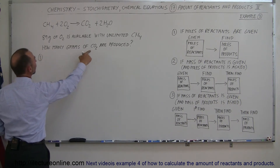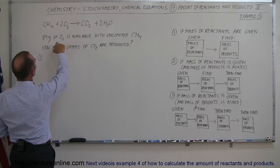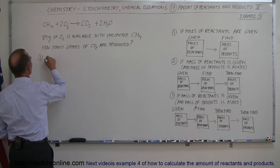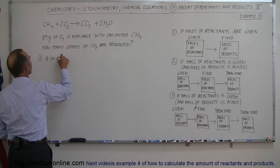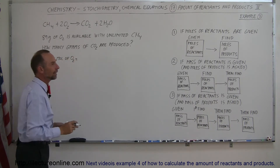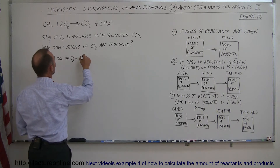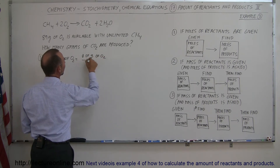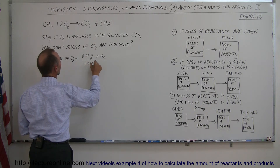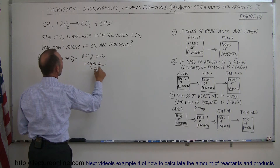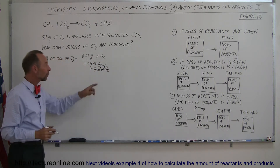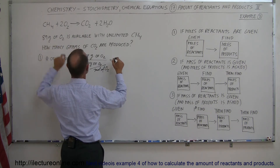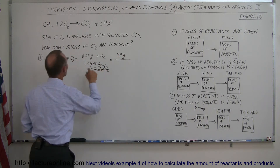Step number one: we're given the number of grams of oxygen and we want to know how many moles of oxygen we have. So the number of moles of oxygen is equal to the number of grams of oxygen divided by the number of grams of oxygen per mole of oxygen. The grams of oxygen cancel out, and we're left with the number of moles of oxygen. So it's a simple ratio. This is equal to 89 grams divided by the number of grams per mole.